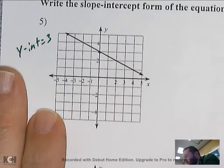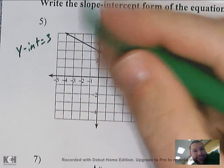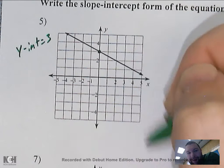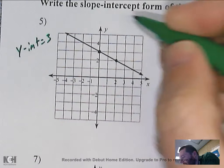It hits right at the y-intercept, so I just need to find one other point. It doesn't matter which one — you usually want the one closest so you don't have to simplify. The next point that hits an intersection looks like it's right there.